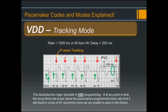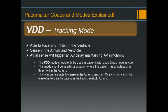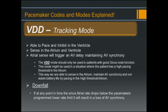This illustrates the major downfall of VDD programming: if at any point the sinus atrial rate drops below the pacemaker's programmed lower rate limit, it results in a loss of AV synchrony, since we are unable to pace in the atrium. VDD mode should only be used in patients with good sinus node function. It might be useful when a patient has a high pacing threshold in the atrium but intact sinus nodal function — allowing us to sense in the atrium and maintain AV synchrony without wasting battery life by pacing a high-threshold atrium.